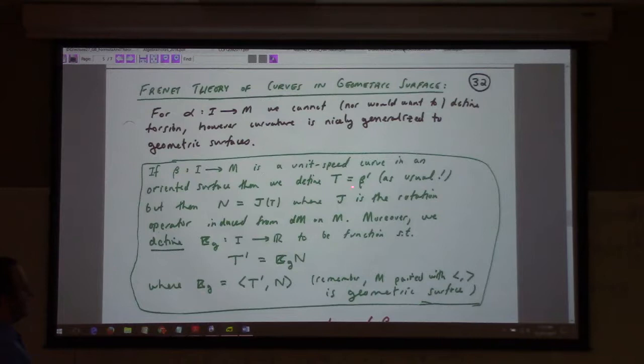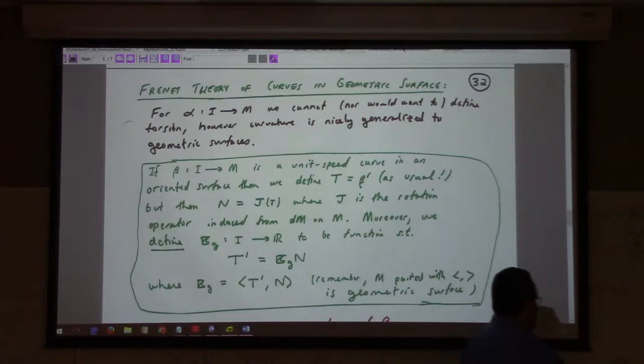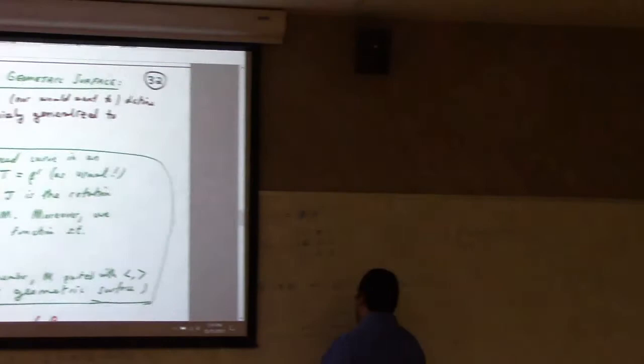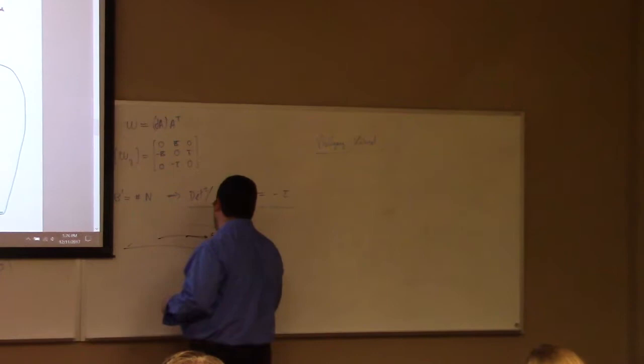The normal is going to be built from JT, where J is the rotation operator induced from the orientation on M. So if this is beta, then this is E1 — that's the tangent.